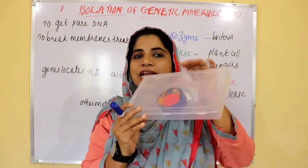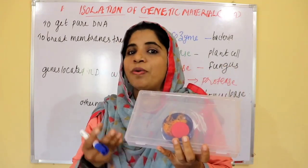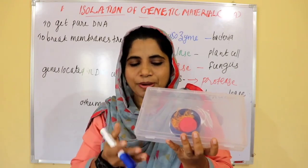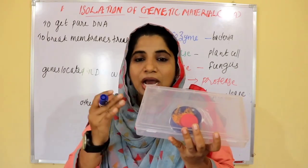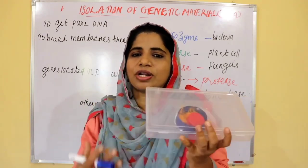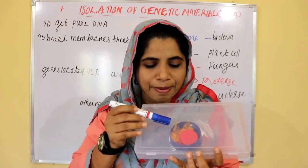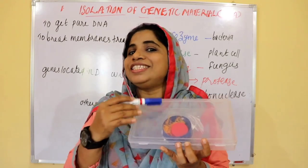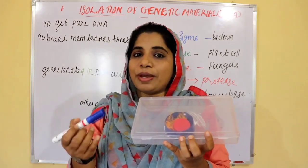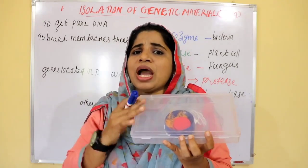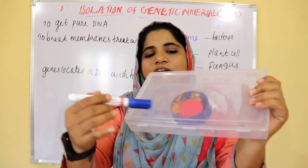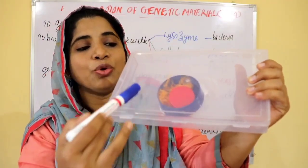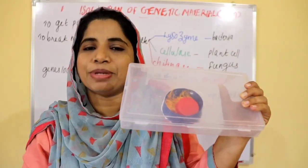There is a cell wall and a plasma membrane — a cell membrane. There is genetic material and histone proteins inside.